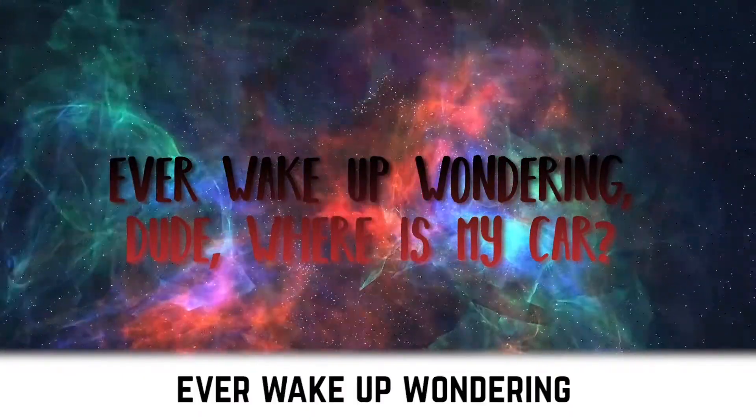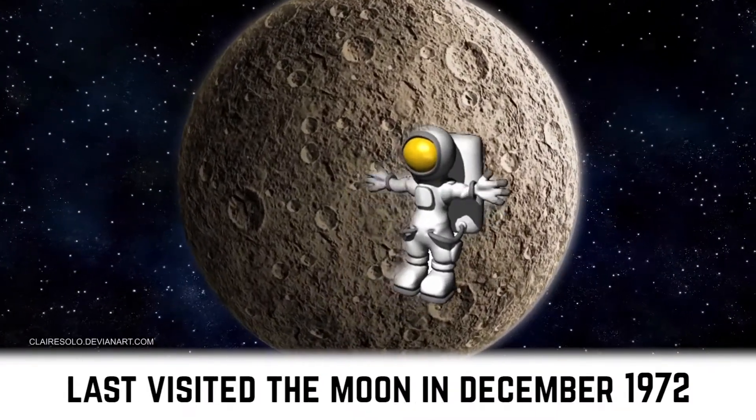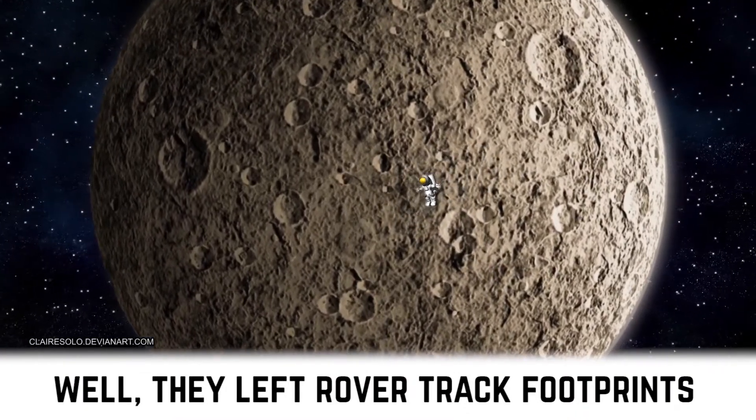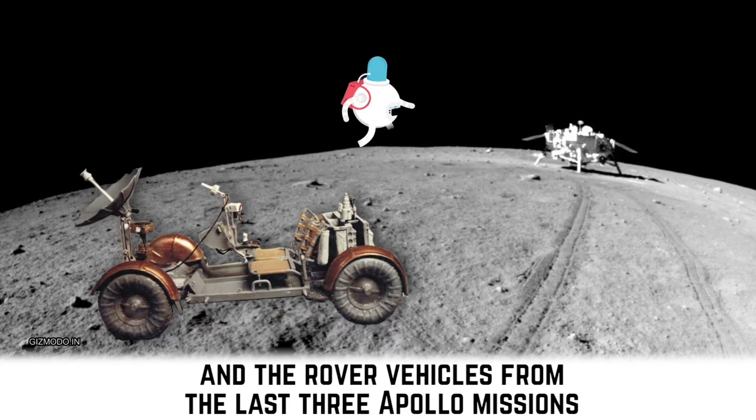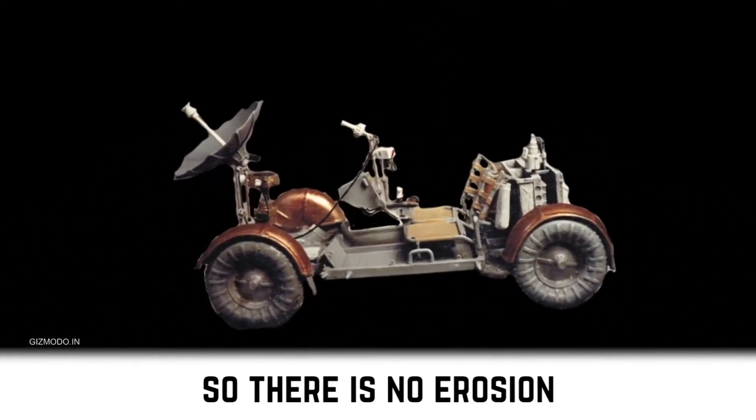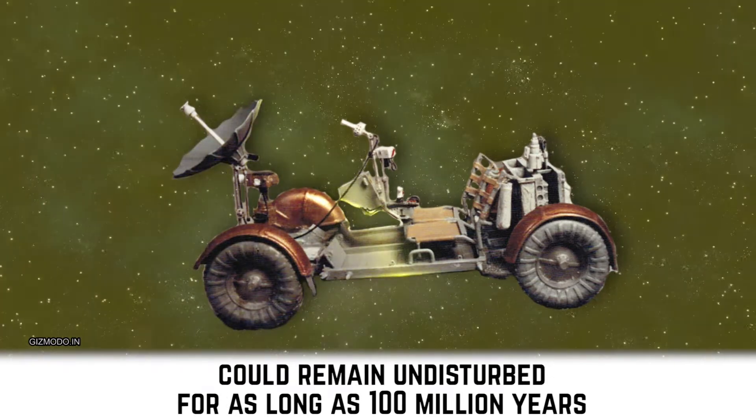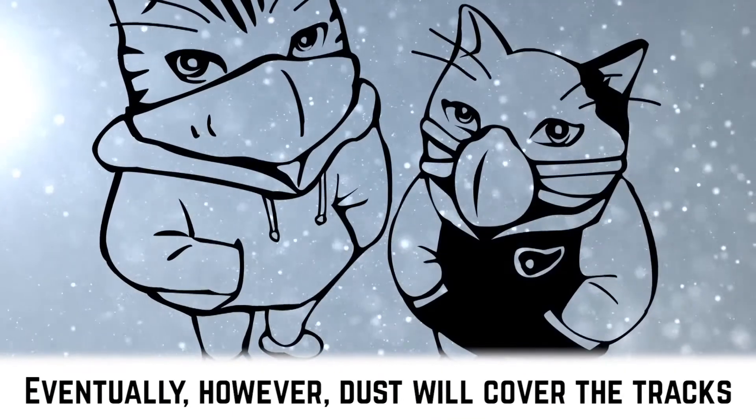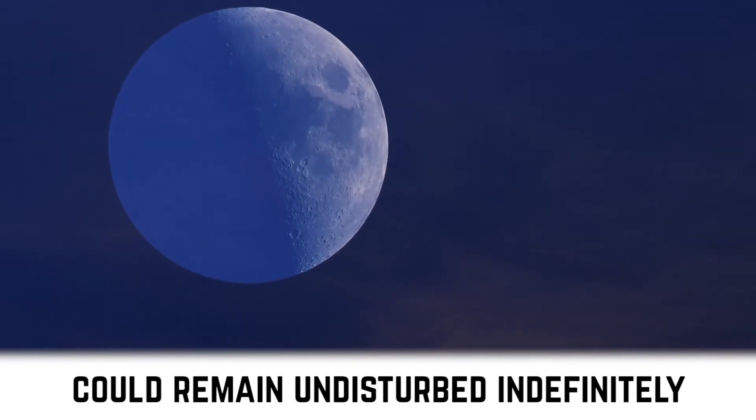Ever wake up wondering, dude, where's my car? Did you know that NASA astronauts last visited the Moon in December 1972? Well, they left their rover track footprints and assorted pieces of equipment, including several landing crafts, and the rover vehicles from the last three Apollo missions. There is no atmosphere on the Moon, so there's no erosion, and this means that these artifacts of human exploration could remain undisturbed for as long as 100 million years. Eventually, however, dust will cover the tracks. These large pieces of discarded equipment could remain undisturbed indefinitely.